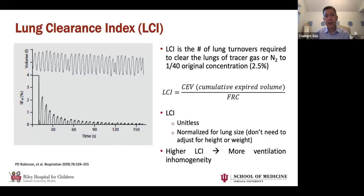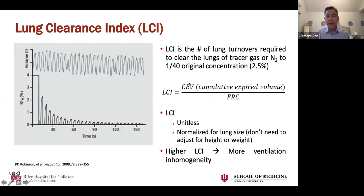The primary measurement in MBW is the lung clearance index, or LCI. Looking at an SF6 example that starts at 4%, the pattern is the same — getting all the way down to 2.5% or 1/40th of the original concentration. Each tidal breath contributes to the cumulative expired volume required to empty the lungs. LCI is defined as the number of lung turnovers required to clear that gas — that cumulative expired volume divided by the FRC. Because both are volumes, LCI is unitless, and because we divide by FRC, it's already normalized for lung size.